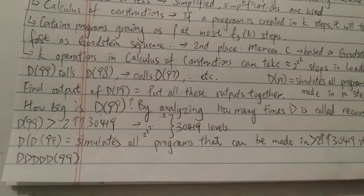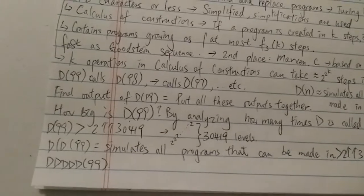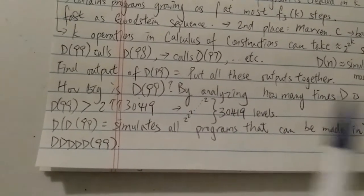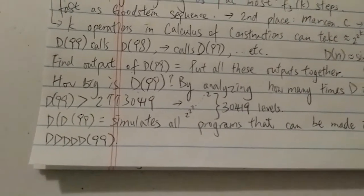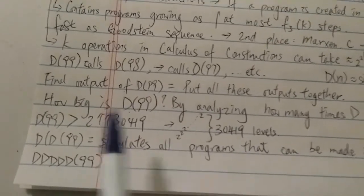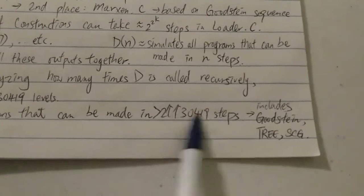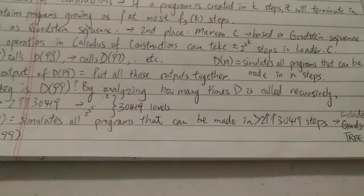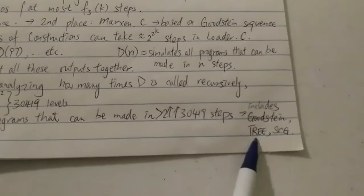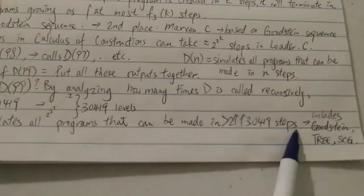For small values of n you may not get an extremely big number, but d(99) is still quite big. This is not as big as Graham's number, but remember this is just a lower bound for d(99). Now what about d(d(99))? That's going to be way way bigger than d(99). For large enough n it will surpass many big numbers, including 3↑↑↑3. d(d(99)) basically simulates all programs that can be made in that many steps — this clearly includes the Goodstein sequence and probably even the tree sequence and SCG, because those functions don't take anywhere near that many steps to build.